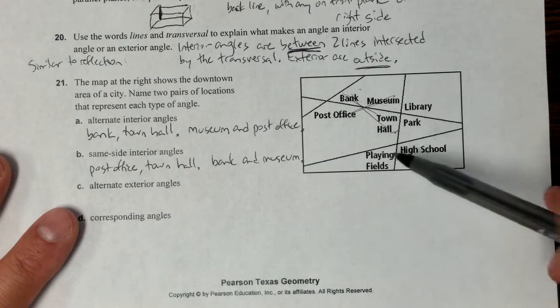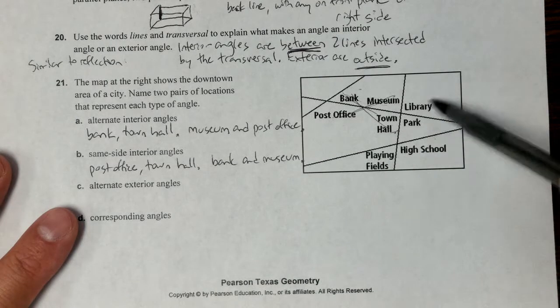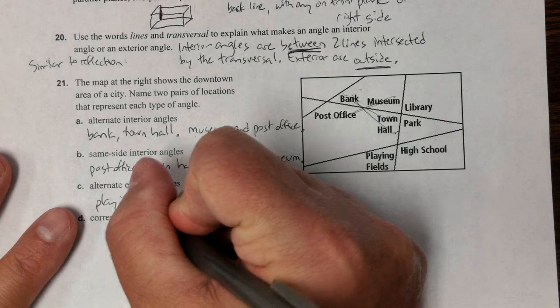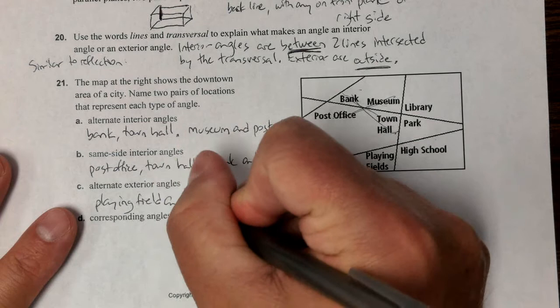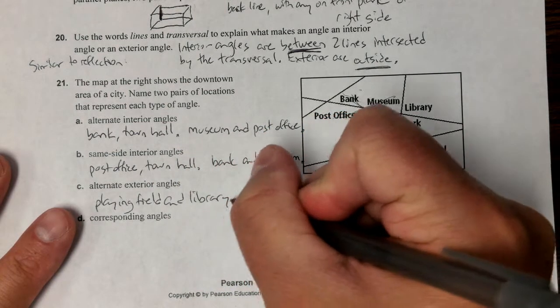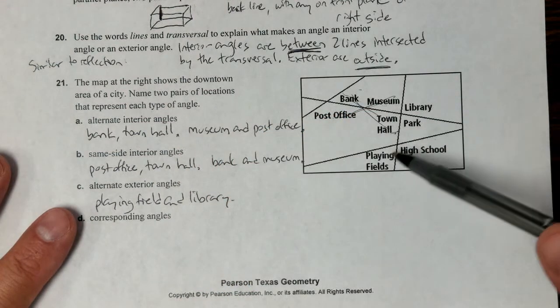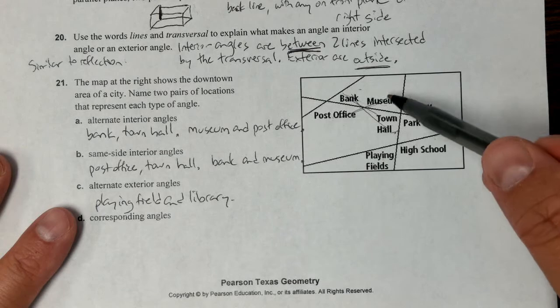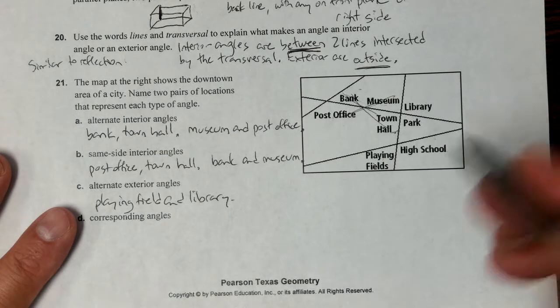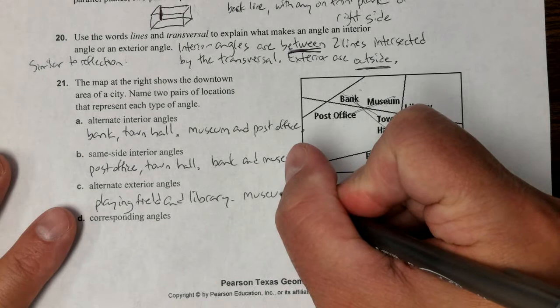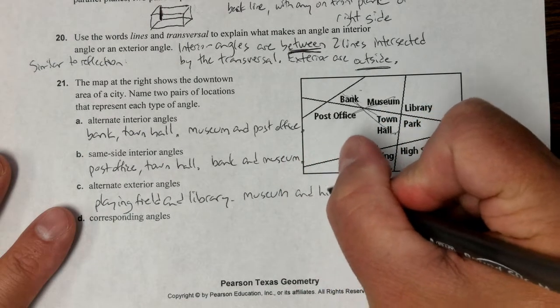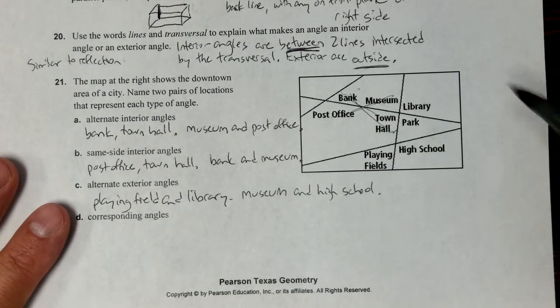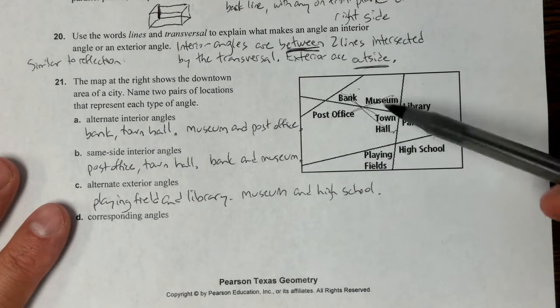Alternate exterior would be like the playing fields with the library. Playing field and the library. Playing fields in the library, and then the other one is the museum in the high school. Museum and high school. So those would be alternate exterior - they're further apart and they're on opposite sides.